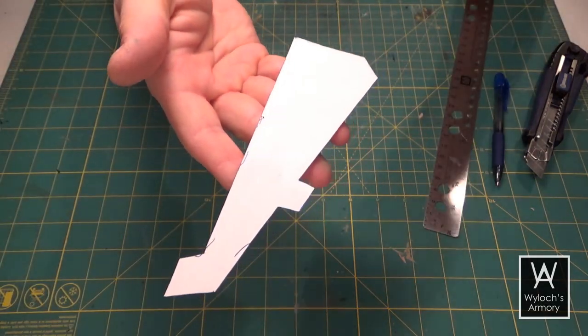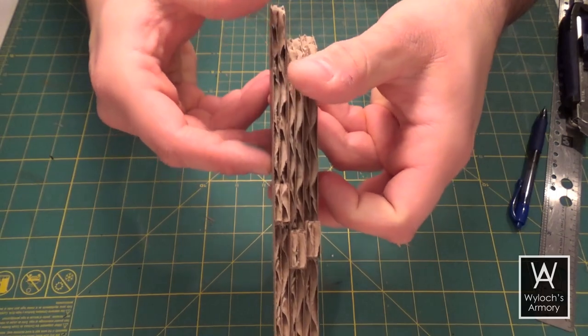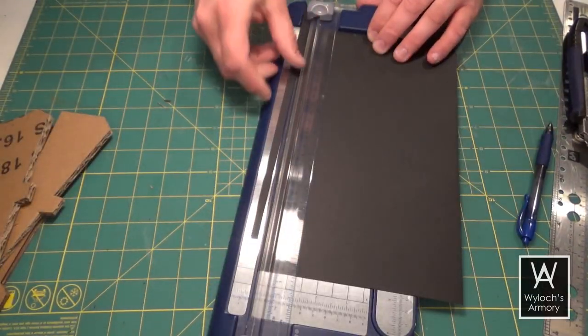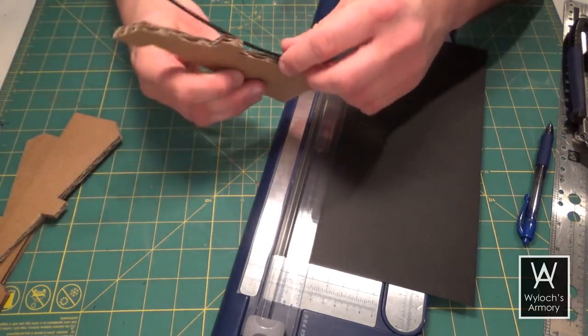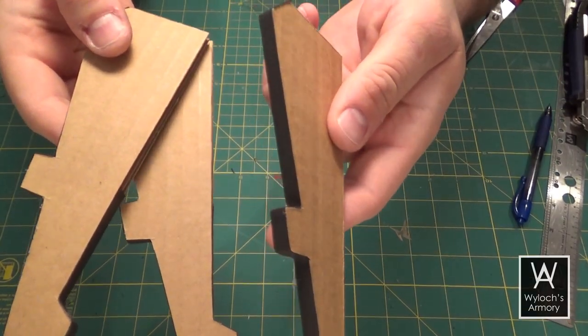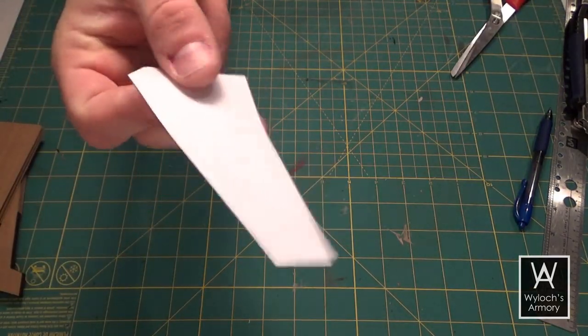Next print this template, trace and cut out three copies of it from double corrugated cardboard, and apply corrugation cladding. If you're new to the channel, that just means hot glue on some very thin cardstock to the corrugation.